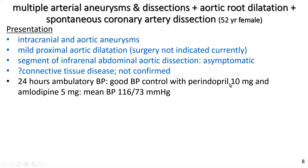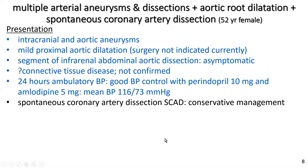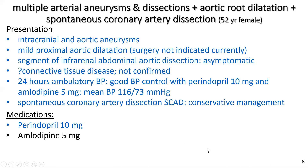Anything ending in 'pril' is an ACE inhibitor or angiotensin converting enzyme inhibitor — so perindipril — and anything ending in 'pine,' such as amlodipine, is a calcium channel blocker. Both are first-line drugs for high blood pressure. On those two drugs, she had very good 24-hour Holter ambulatory blood pressure, averaging 116 mmHg systolic. However, she was diagnosed with spontaneous coronary artery dissection and was being managed conservatively, with perindipril and amlodipine as her medications.